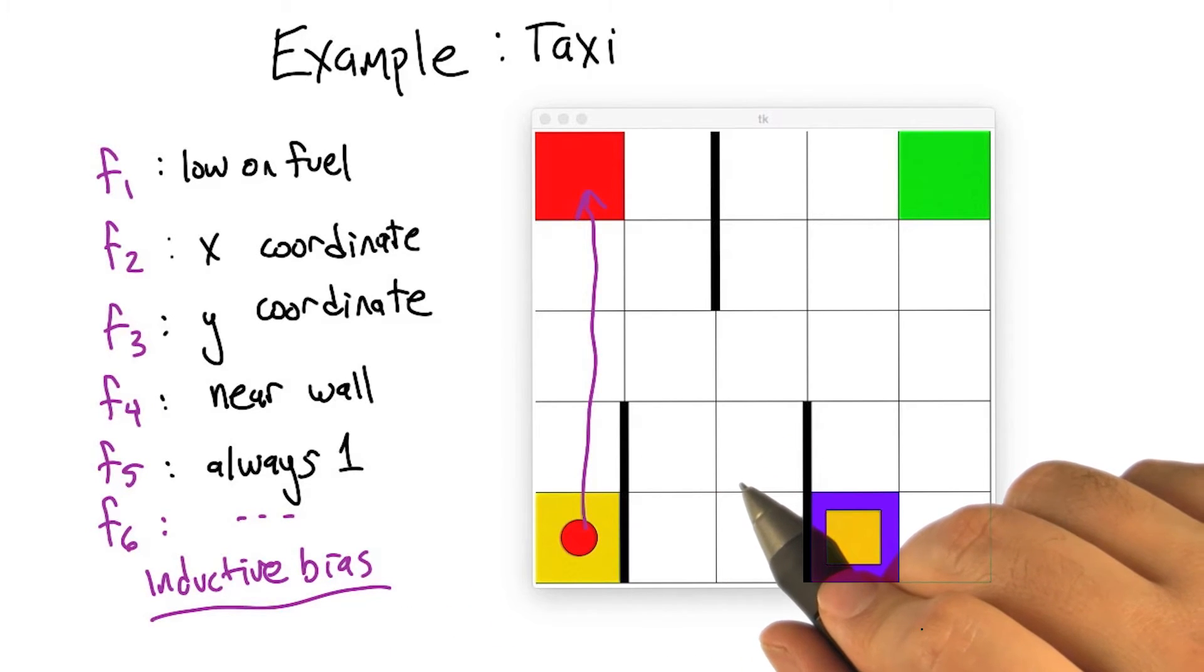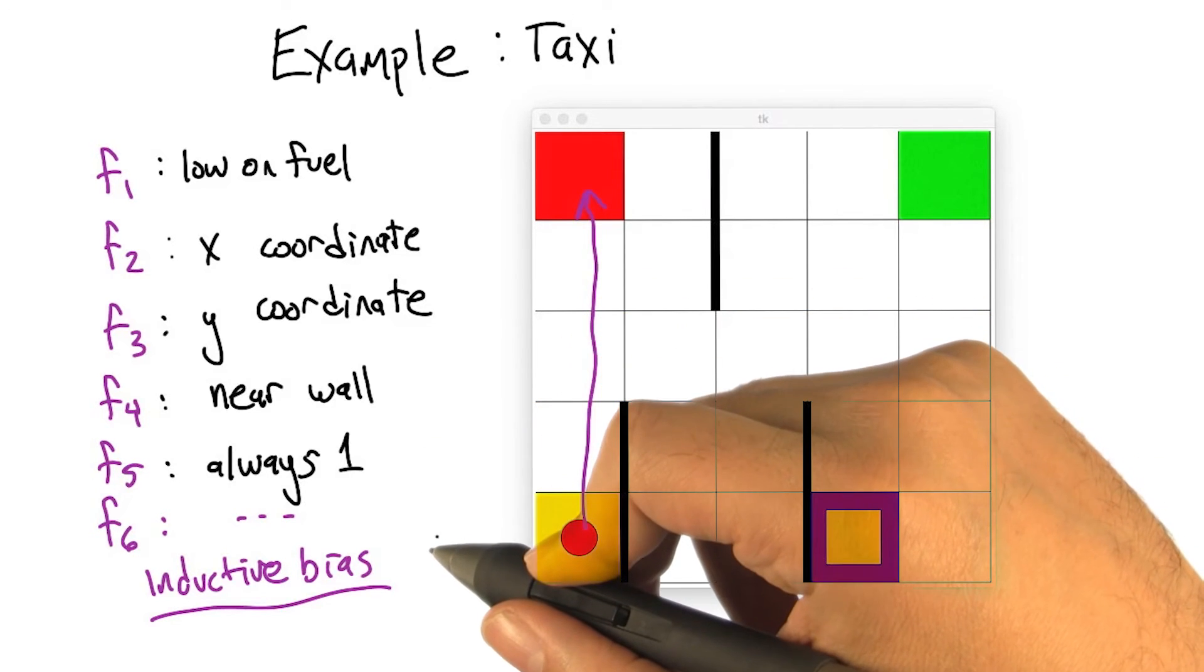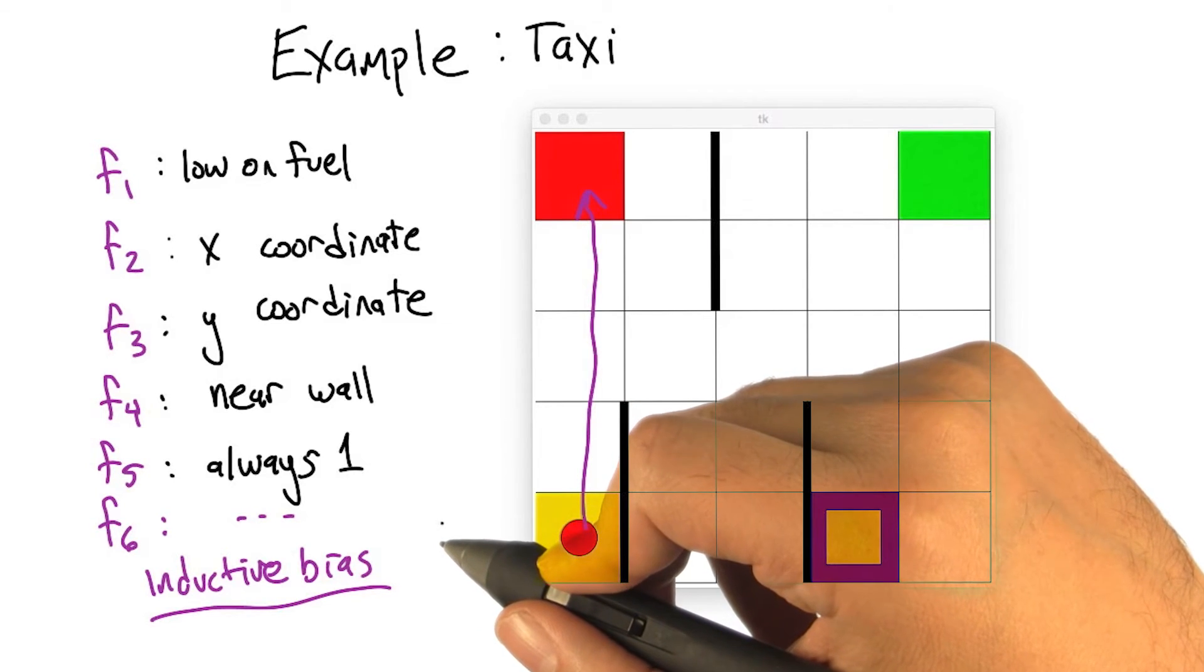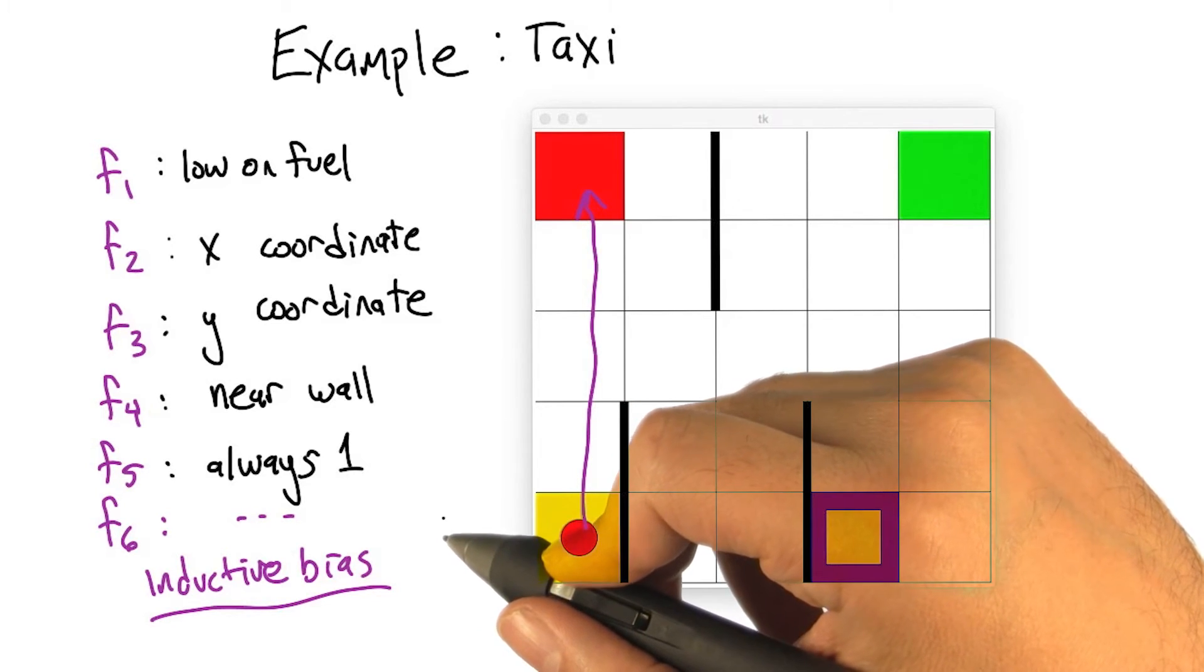I think it was inductive bias. Inductive bias was something that referred to the way algorithms preferred one solution over another. Oh. But I think you're right, though, because different features sort of create different kind of inductive biases by making some states look more similar.